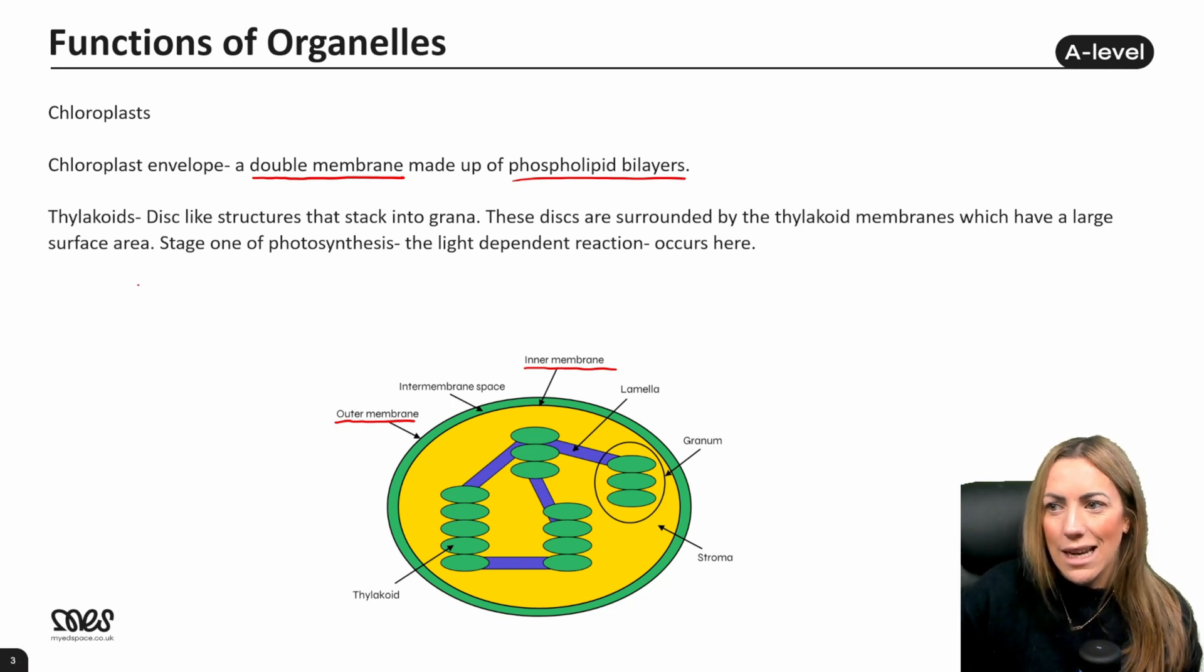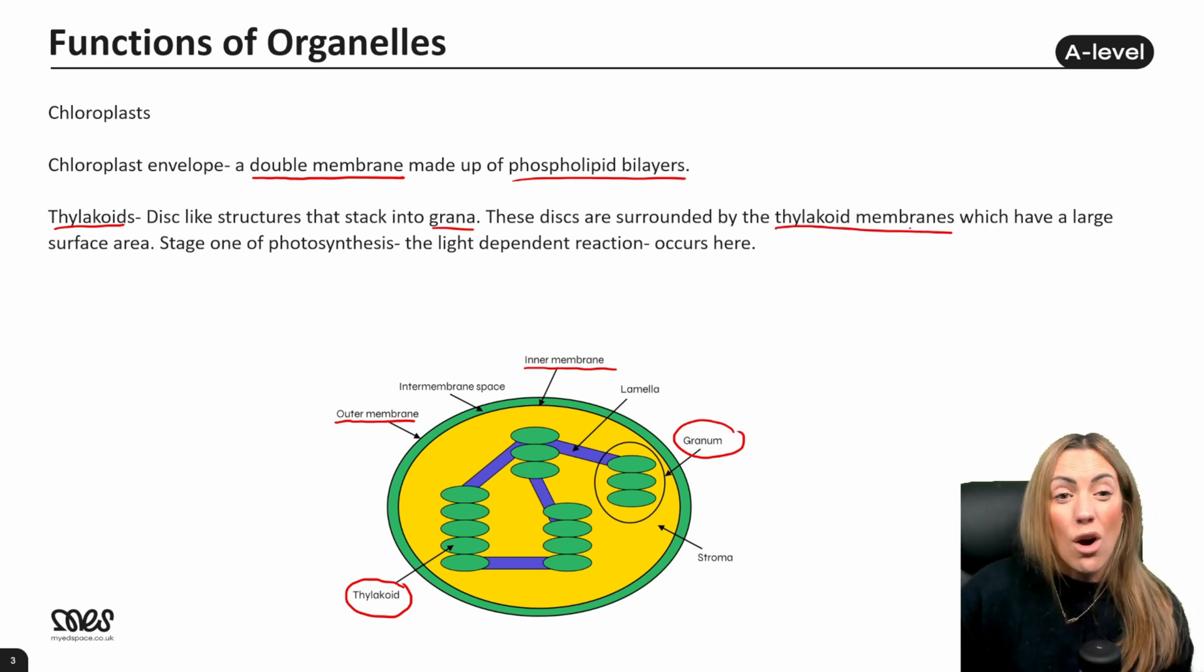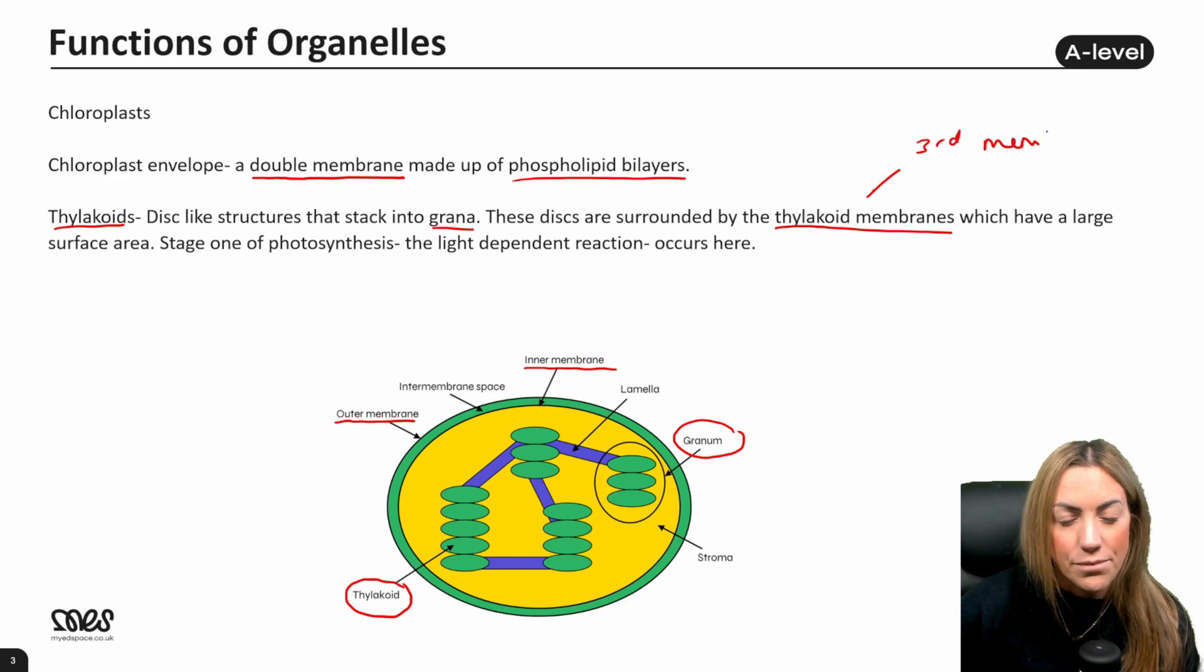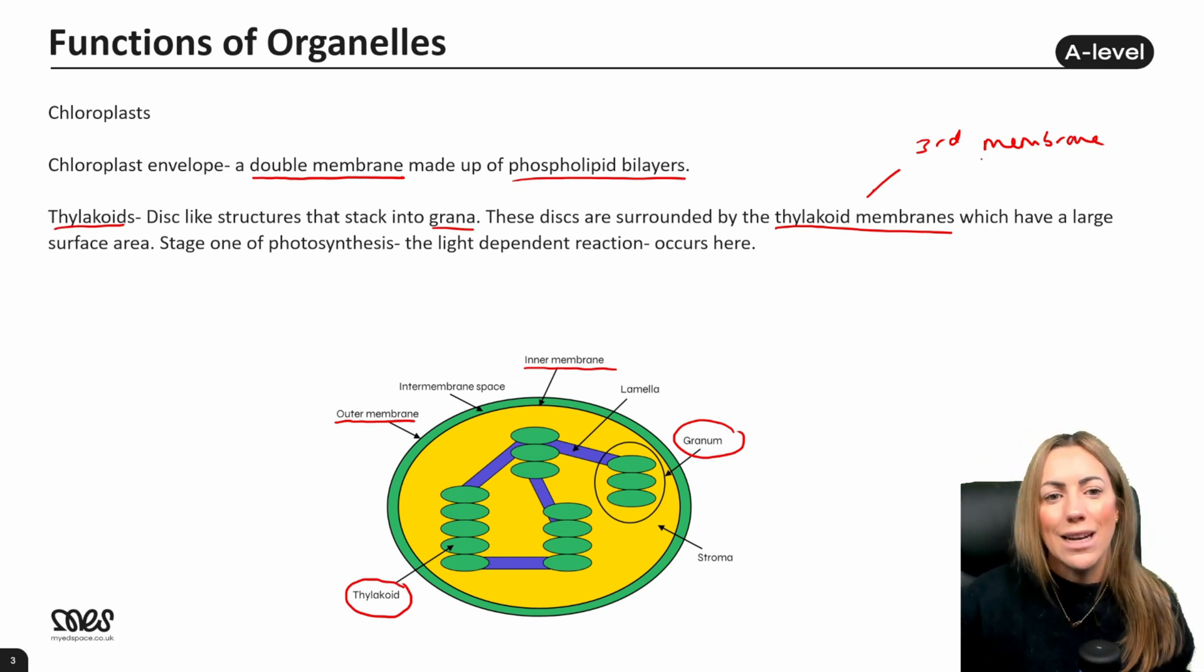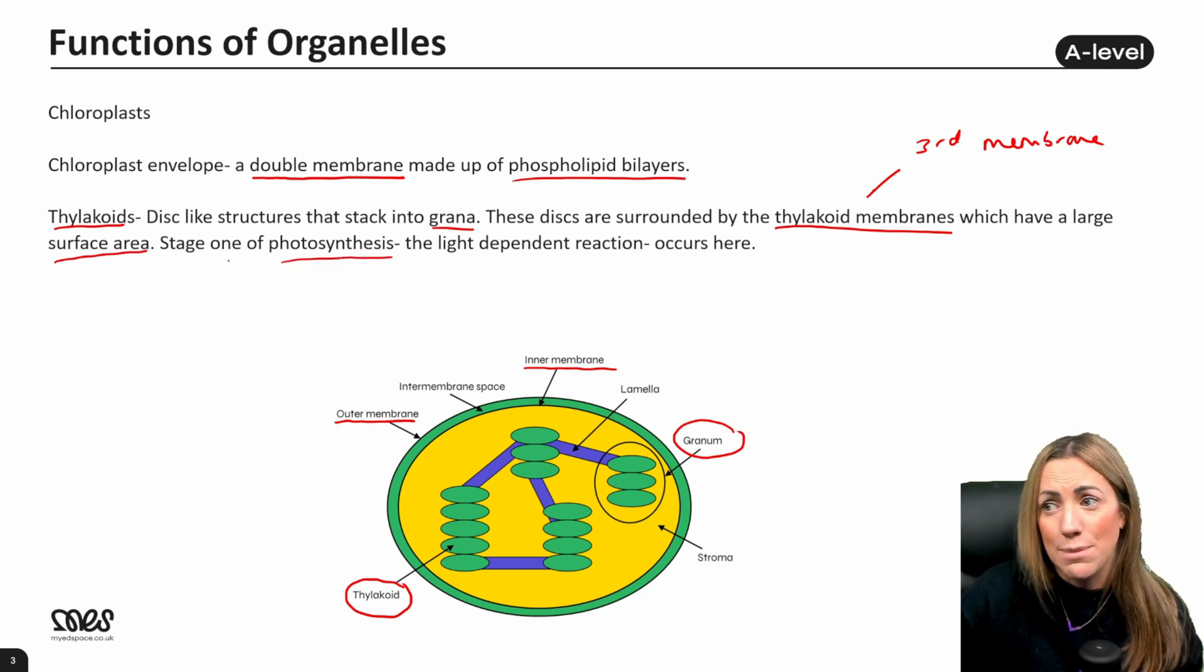The thylakoids are disc-like structures that stack into grana. You can see a granum here, which is a single stack of thylakoid discs, but there are multiple grana. So grana is just plural. You can see here one of the individual thylakoids or thylakoid discs, and they stack up to form a granum. These discs are surrounded by a thylakoid membrane. So we've got a third membrane in the chloroplast. We have the outer membrane, inner membrane, and the thylakoid membranes that surround the thylakoid discs. They have a really large surface area, and that is important for photosynthesis because stage one, which is the light-dependent reaction, occurs on the thylakoid membrane. So the larger the surface area, the more of the light-dependent reaction can occur, which if you're year 13, you'll know it makes ATP and NADPH.